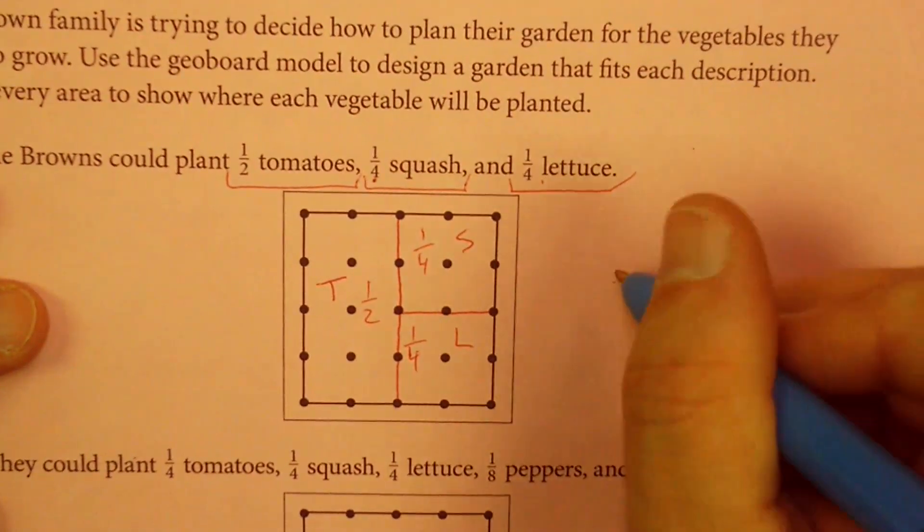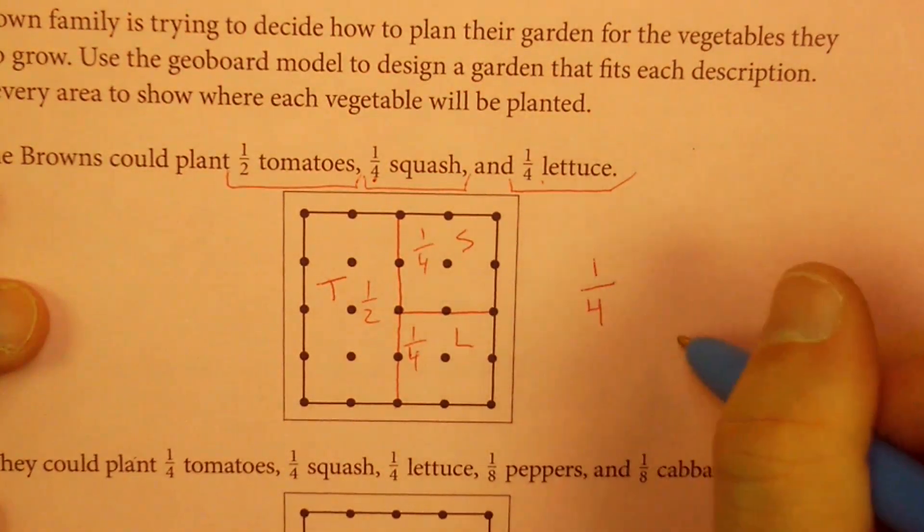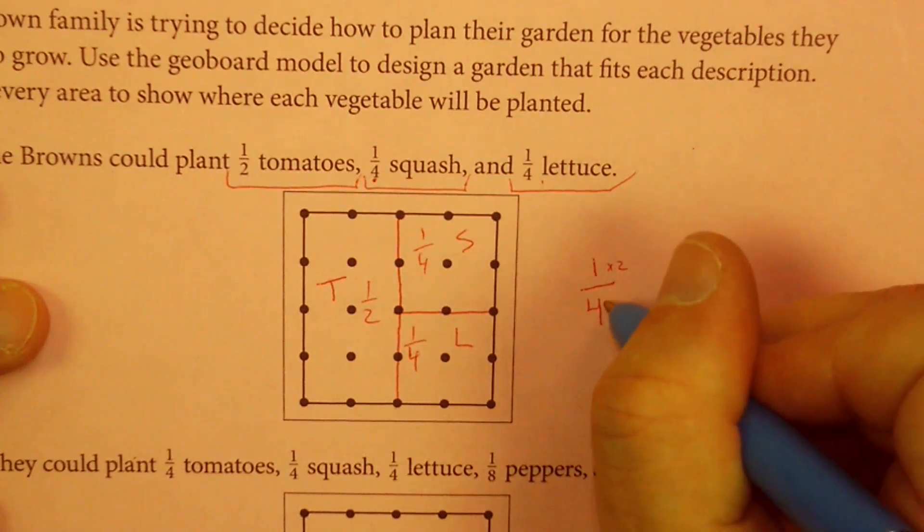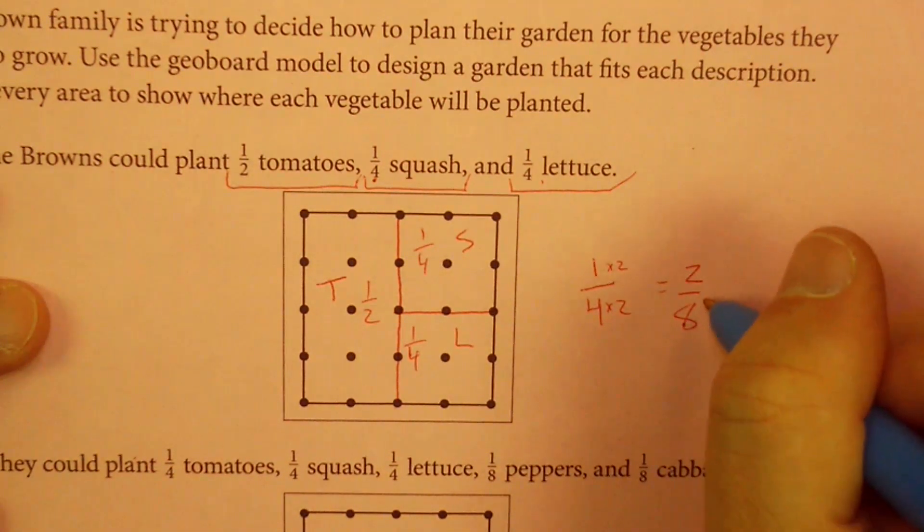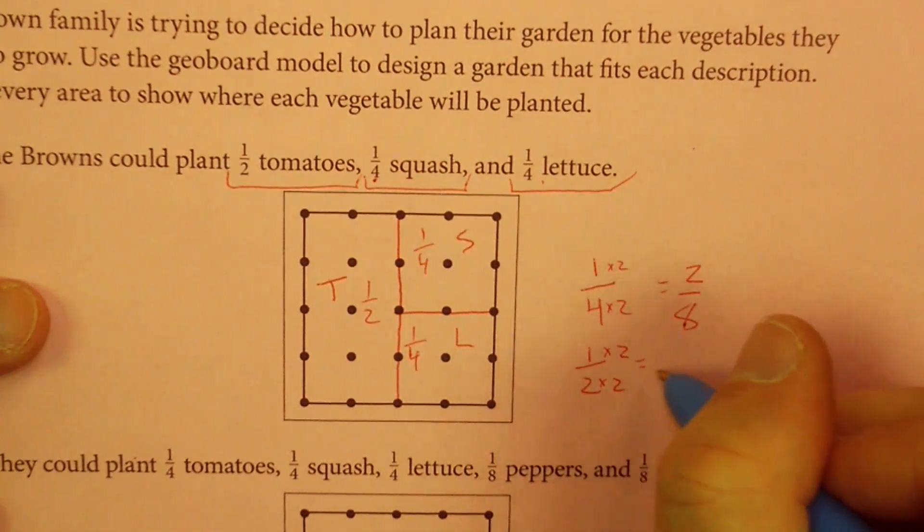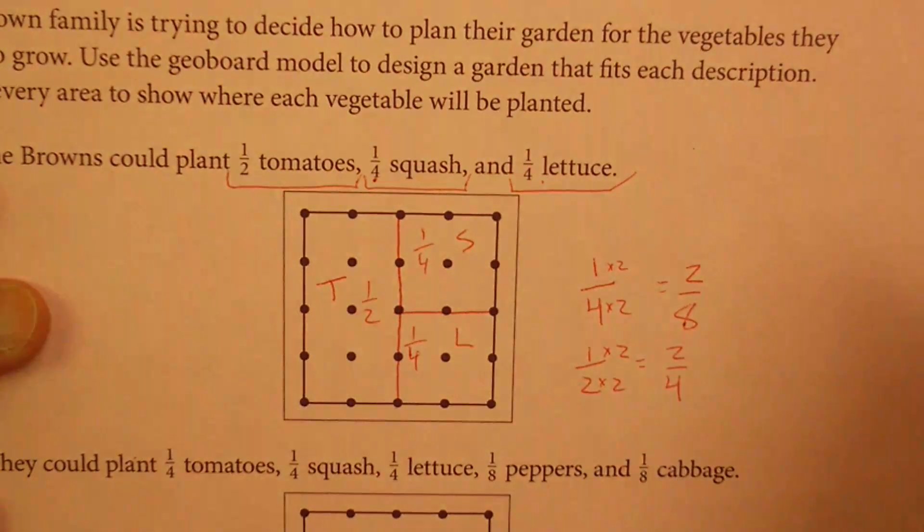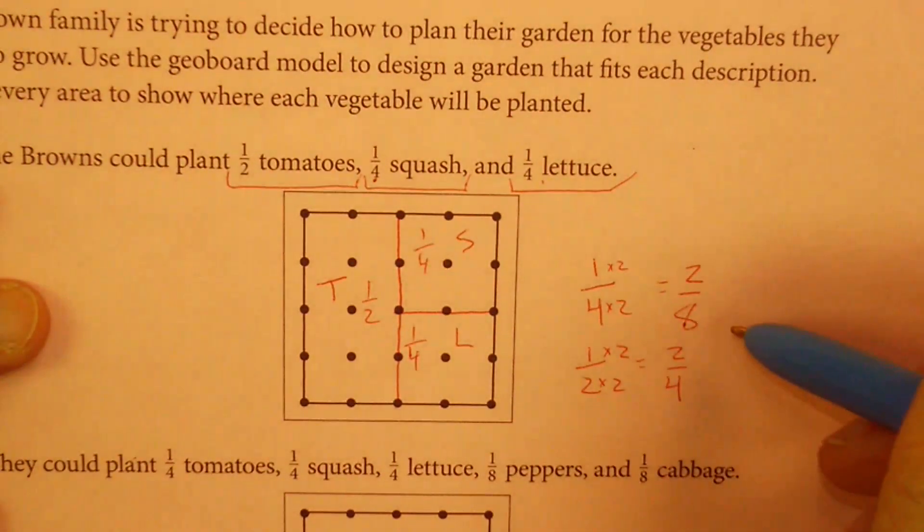The interesting thing about the relationship between one-half and one-fourth is if I take one-fourth and I double it, so if I take the top number times two and I take the bottom number times two, I end up with two-eighths, which appears to be smaller, but it is the same. Now if I do the same thing with one-half and I double it, take both of the numbers and I double them, what do I end up with? Two-fourths. So you can find fraction equivalents doing this, which is pretty helpful, and we might need those a little bit later.